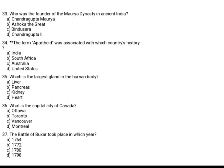Who was the founder of the Maurya dynasty in India? Option A: Chandragupta Maurya. Option B: Ashoka the Great. Option C: Bindusara. Option D: Chandragupta II. He was the founder of the Maurya dynasty. The answer is Option A, Chandragupta Maurya.